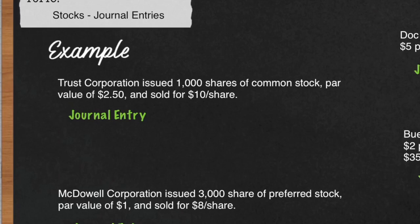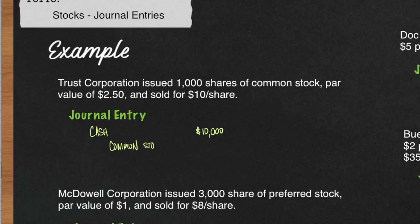You want to debit cash for $10,000. The $10,000 is the $10 per share times 1,000 shares of common stock. Because it's common stock, you want to credit common stock. To common stock, you multiply the par value of $2.50 times the 1,000 shares of common stock, which will give you $2,500.